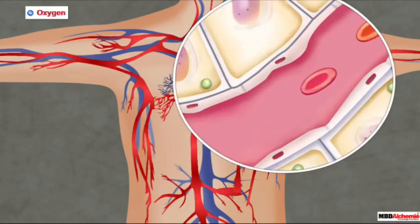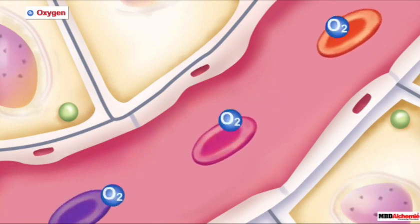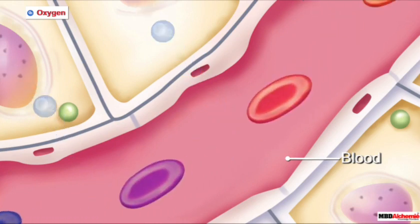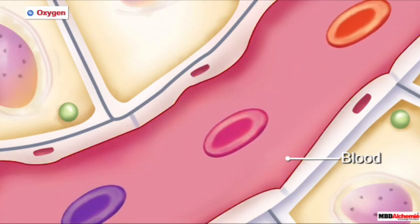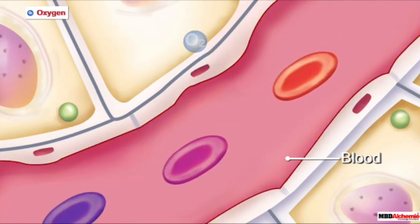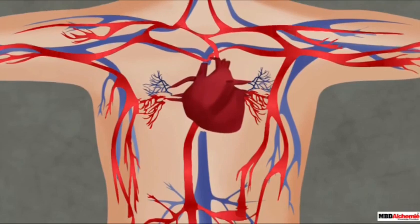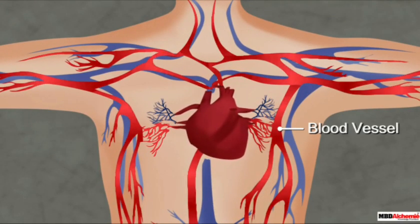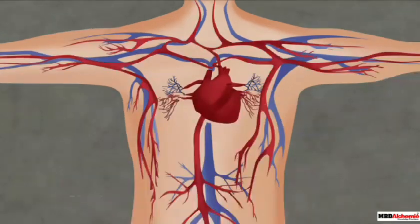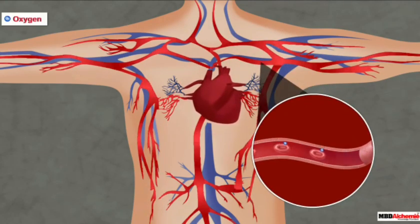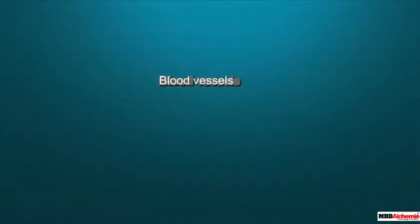You can see in the picture that it is transporting all the substances throughout the body. It is the blood which helps to transport these substances through a tunnel-like structure. This tunnel-like structure is called blood vessels — thin and hollow tubes which connect the heart to different parts of the body and help in transportation.